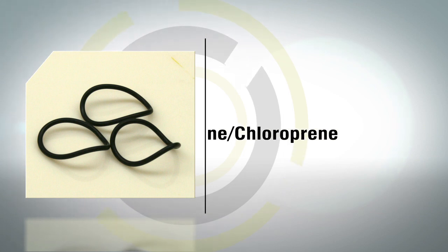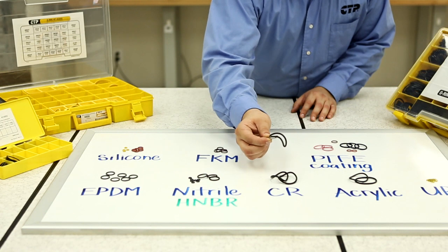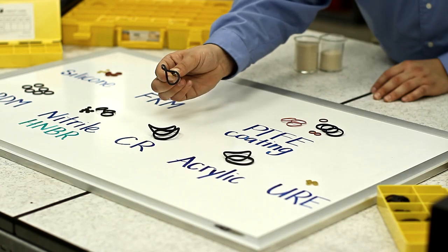Another material used for CTP O-rings is neoprene chloroprene. This component is an excellent repellent of oxygen, UV light, and oils.